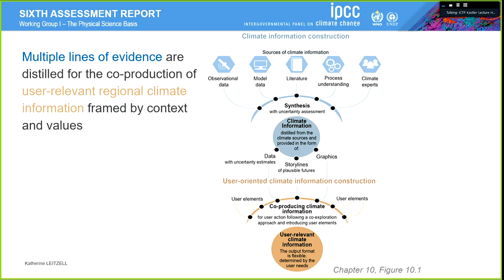The methodology is represented in these figures here. To go to such high resolution scale, we need to construct the information together with the stakeholder and take into consideration many things. We need to evaluate the observational data, the models, and the literature to understand what is happening. Then we need to synthesize all this information, create distilled climate information, and deliver it through data by estimating the uncertainty. We need to use a storyline if needed — for example, to tell what is the worst-case scenario and how likely it is — and then we can use good graphics. All this information has to be user-oriented and co-produced with the user.